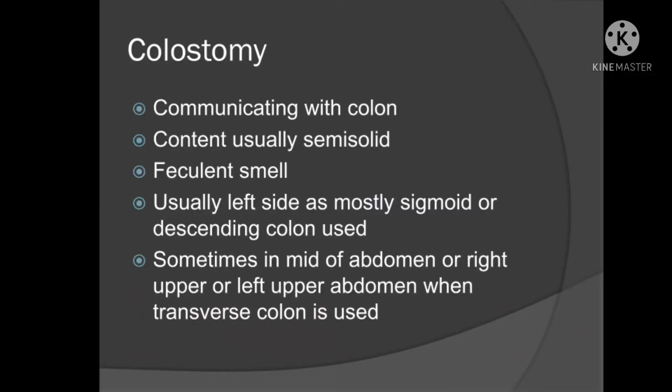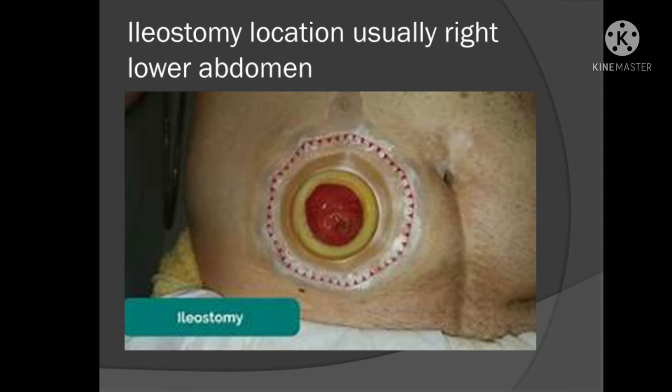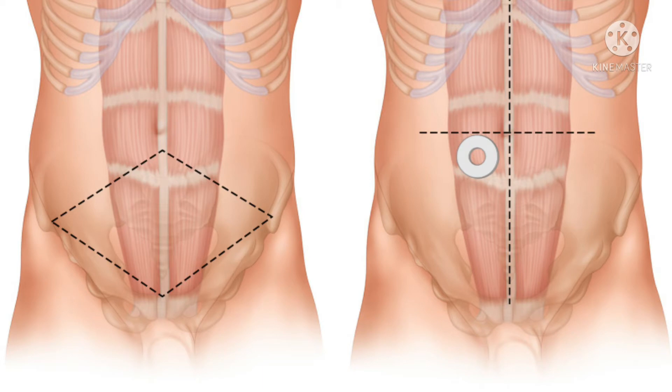In ileostomy the content is more liquid as compared to colostomy. If the patient has a colostomy he may be passing solid stool, while in ileostomy the texture will be more liquid. Ileostomy is usually prepared from the terminal ileum, which is proximal to the ileocecal junction, and this lies on the right lower abdomen.